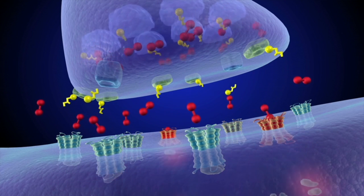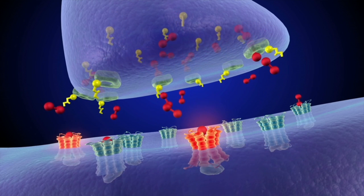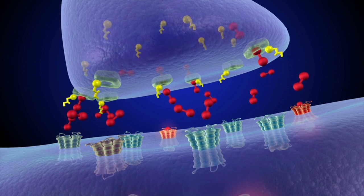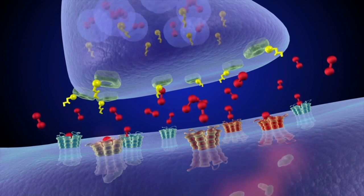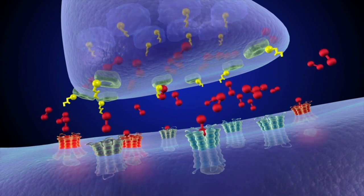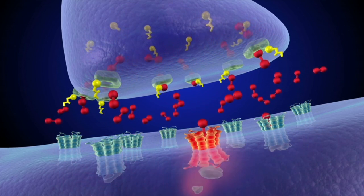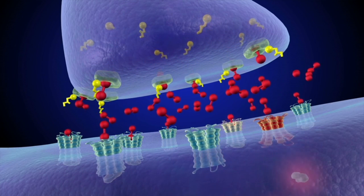But unlike cocaine, higher doses of meth can increase the release of dopamine from the cell, leading to much, much more dopamine in the synapse, where it becomes trapped since meth prevents the transporters from removing it.